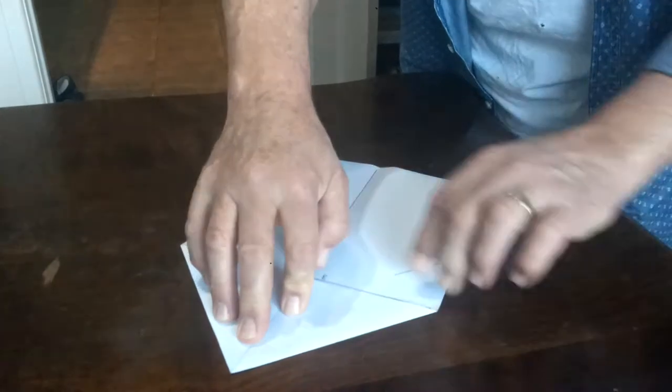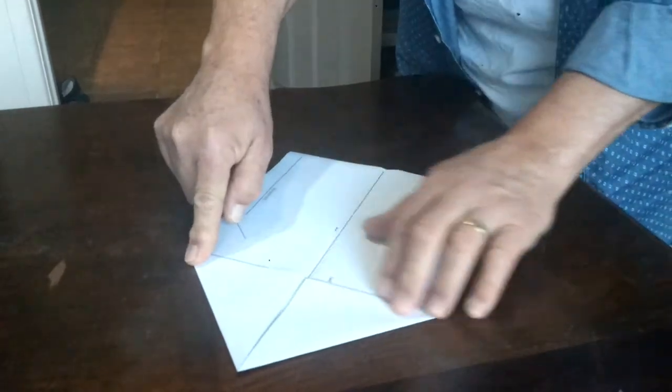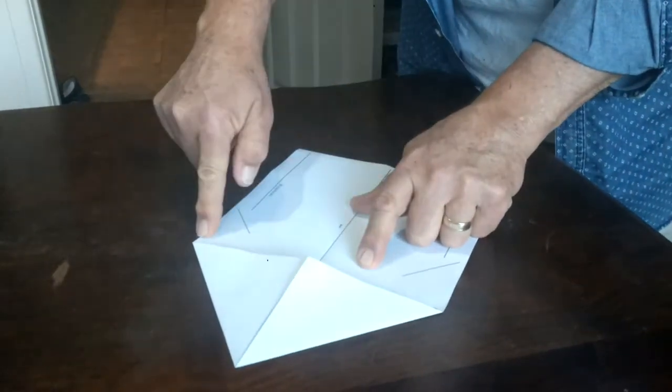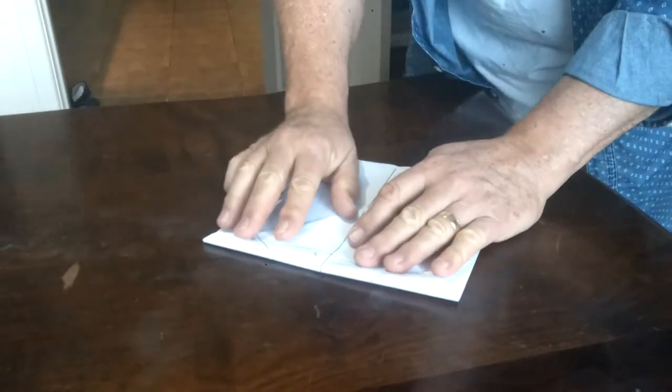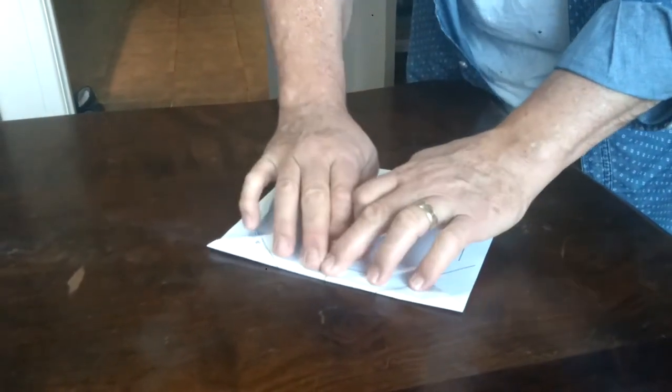But we need to make a pointy triangle at the front. Number three is this line here. So we fold towards number three. Basically fold that over and line it up.